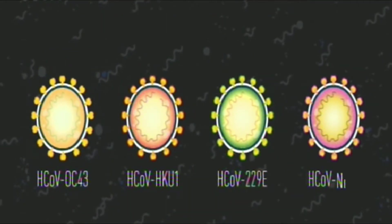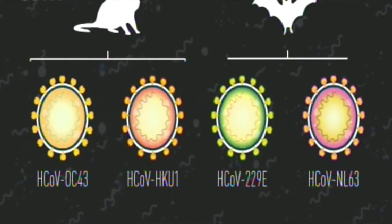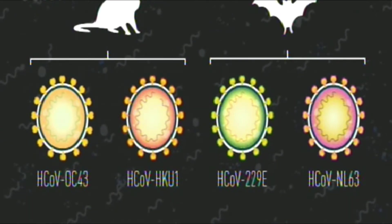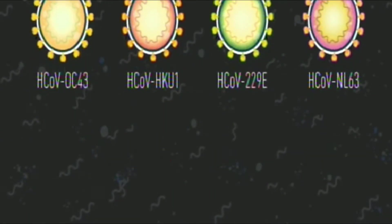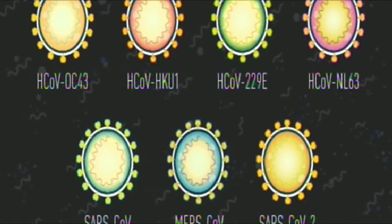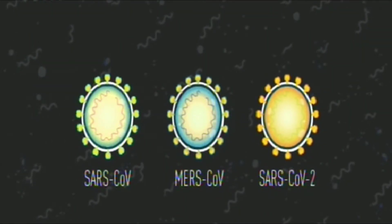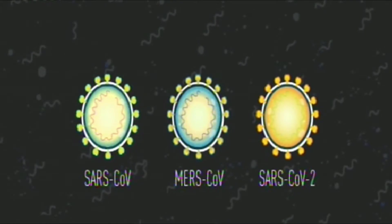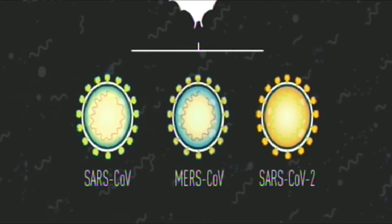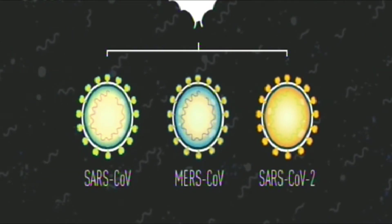Four of them cause the common cold, with two believed to have come from rodents and two from bats. The other three, which all emerged in the 21st century, have been significantly more deadly, causing serious disease. They, too, have also been linked to coronaviruses in bats.